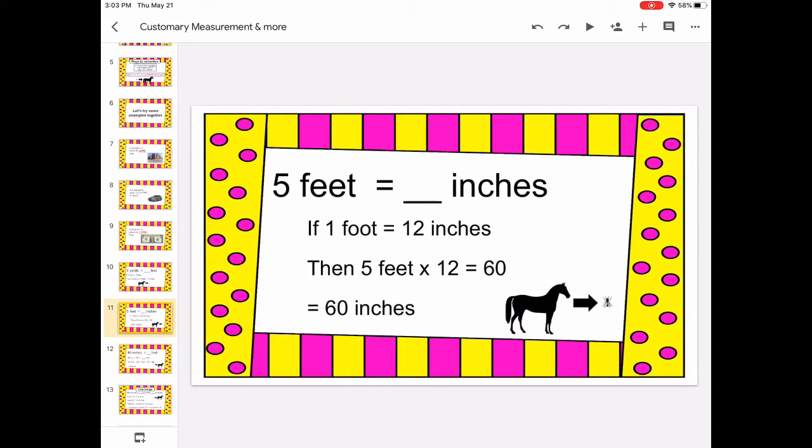Feet to inches follows the same pattern. If there's one foot in 12 inches, then if you have five feet you're going to a smaller unit of inches, then you'd multiply it by how many inches in one foot. Maybe five times 12 is 60 inches.